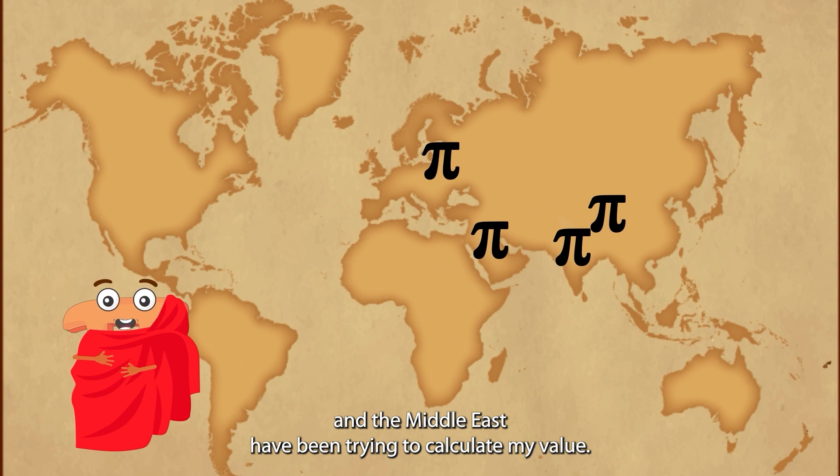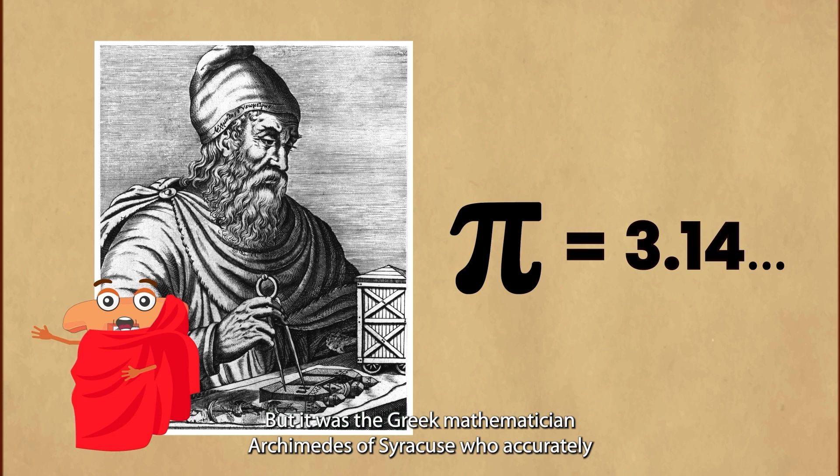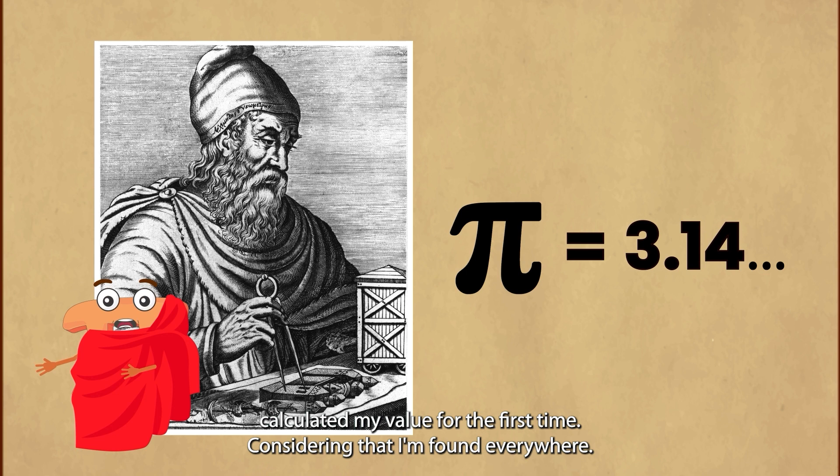But it was the Greek mathematician Archimedes of Syracuse who accurately calculated my value for the first time. Considering that I'm found everywhere, isn't it strange that nobody else noticed me before that?